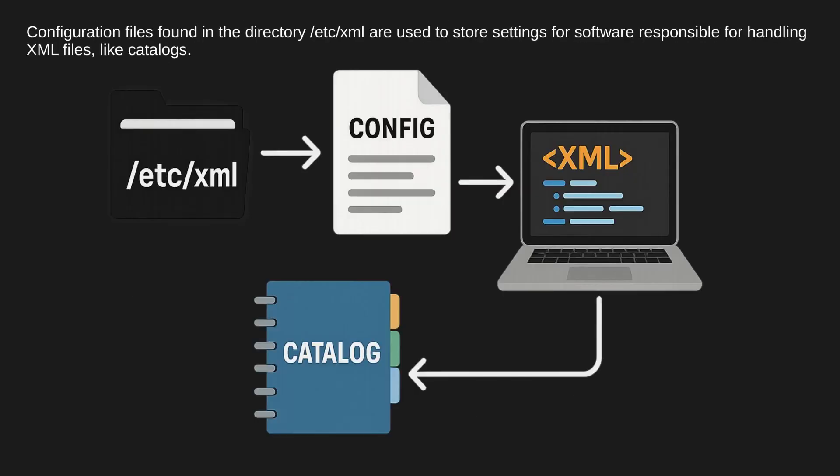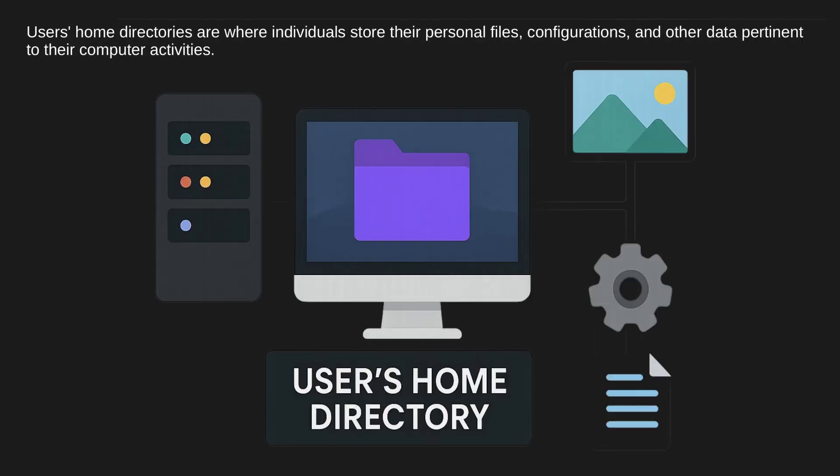Configuration files found in the directory /etc/xml are used to store settings for software responsible for handling XML files, like catalogs. Users' home directories are where individuals store their personal files, configurations, and other data pertinent to their computer activities.